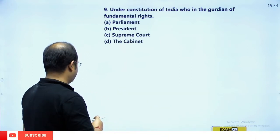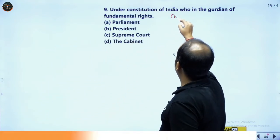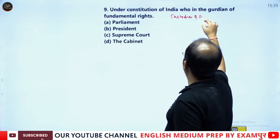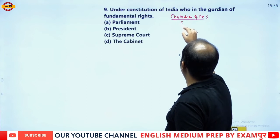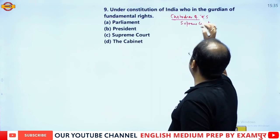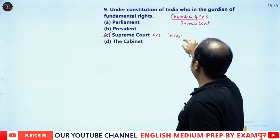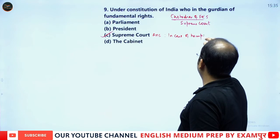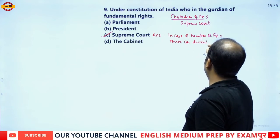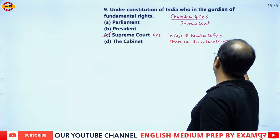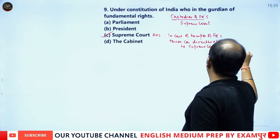The guardian — or custodian — of Fundamental Rights is the Supreme Court. In case of violation of Fundamental Rights, a person can directly approach the Supreme Court through Article 32. The correct answer is option C, the Supreme Court.